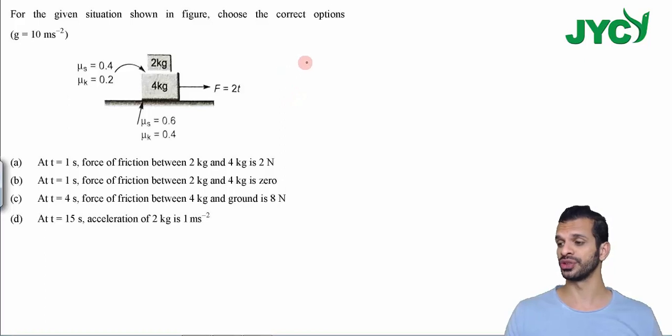So this question is a multiple choice question where one or more than one option is correct. Now we have 4 options. We have to check which options are correct. So how to solve this question and what is given?